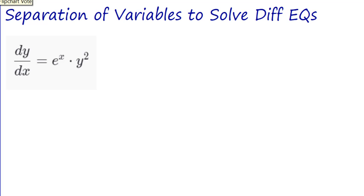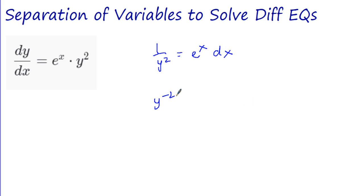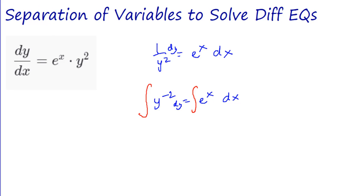Let me show you another problem. Here we have the differential equation dy/dx equals e^x times y². I want to separate my variables in order to solve this, so I'm going to get my y's on one side. We have (1/y²) dy — or y^(-2) dy — equal to e^x dx. Because the dy was still on that side; we divided by y². We have our dx on the other side, so now we're primed and ready to integrate.